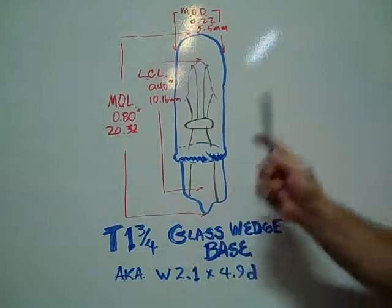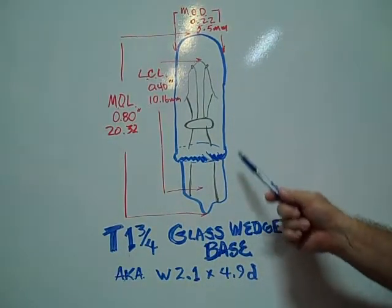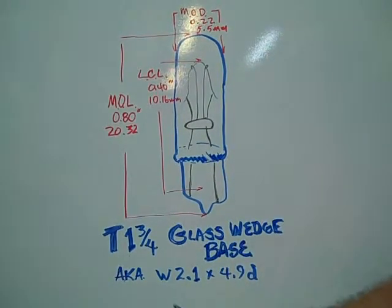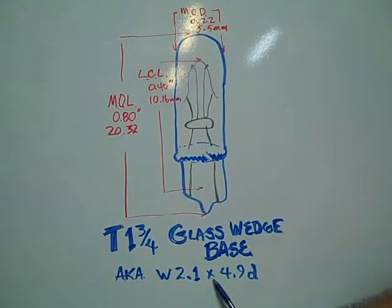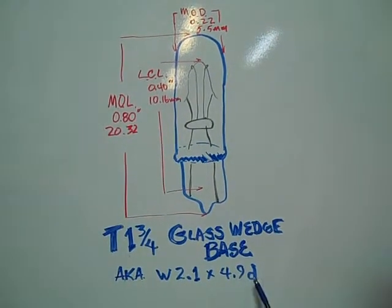The T-1¾ glass wedge base bulb, also known as a W2.1 x 4.9D,